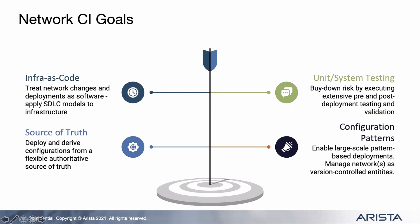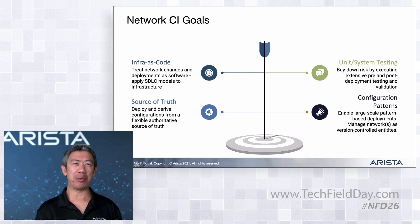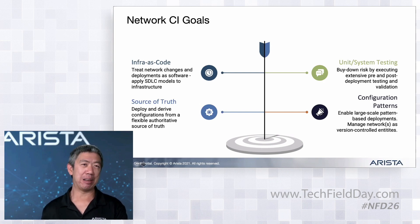Some goals we've set for network CI — network continuous integration. The top-left one is infrastructure as code. The principles we're introducing aren't new; they've been used in software development for ages — we're just applying them to infrastructure and networking. Treating your network configuration and changes as software introduces the concept of having a source of truth to derive configurations from. One thing people get hung up on is thinking there must be one authoritative source of truth for everything, but really you need a source of truth for each specific piece of data.